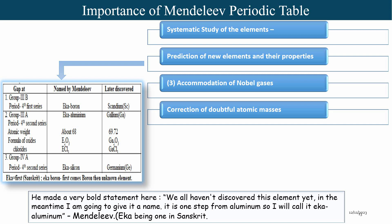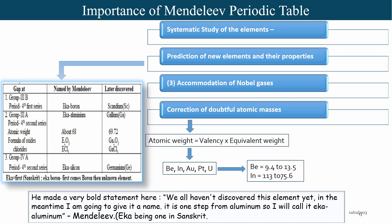He made a very bold statement: having not yet discovered the element, he gave it a name — eka-aluminium, 'eka' meaning 'one' in Sanskrit, indicating it was one step from aluminium. A third important aspect of Mendeleev's periodic table was that when the noble gases were later discovered, they were easily accommodated without any change in the positions of other elements. Mendeleev also corrected some doubtful atomic masses previously calculated by Berzelius.